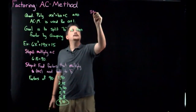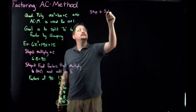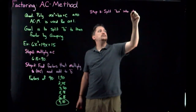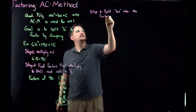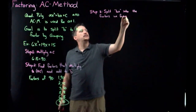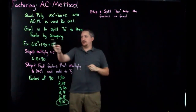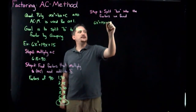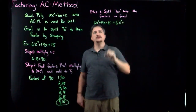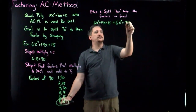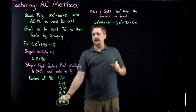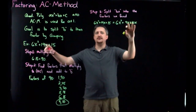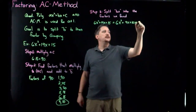Step three: split Bx into the factors we found. So looking back at the original polynomial, 6x² + 19x + 15, I'm going to rewrite that as 6x² + 9x + 10x + 15. I'm splitting the 19x using 9 and 10. By definition those two add to B, so this doesn't change anything — that's why it's important they add to B.